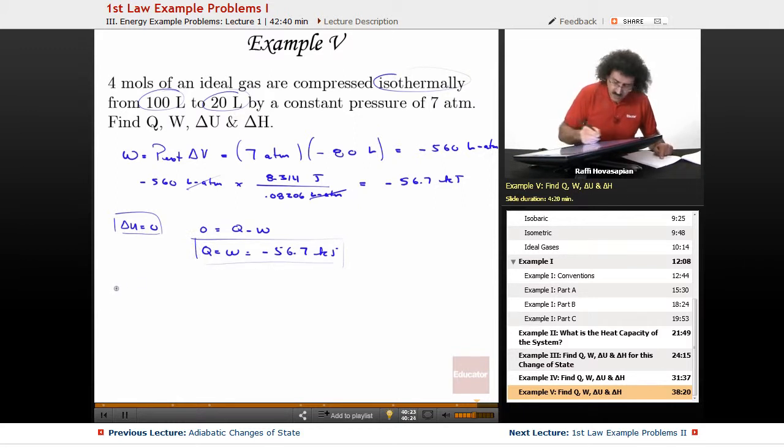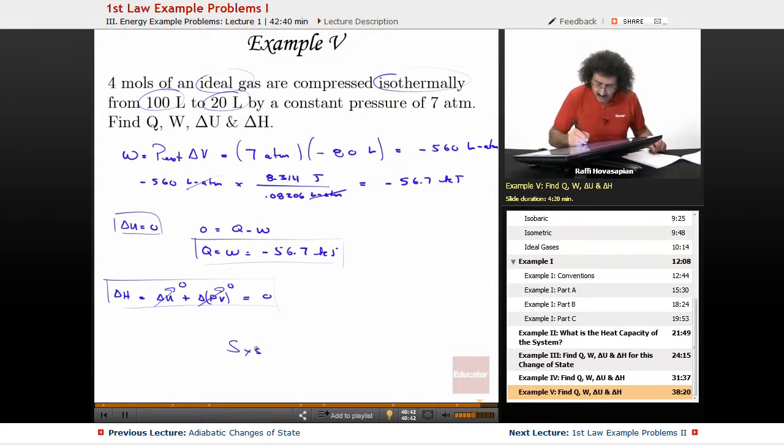And we have already worked out the delta H part. Delta H is equal to delta U plus delta PV. We are dealing with an ideal gas. This is 0, this is 0. So our delta H is 0.